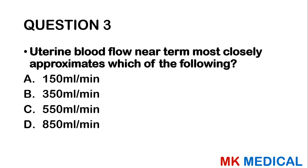Question 3: Uterine blood flow near term most closely approximates which of the following? A — 150 mls per minute. B — 350 mls per minute. C — 550 mls per minute. D — 850 mls per minute. Some of these questions are actually anatomy or physiology questions, so you have to revise your maternal anatomy. The answer is 550 mls per minute.